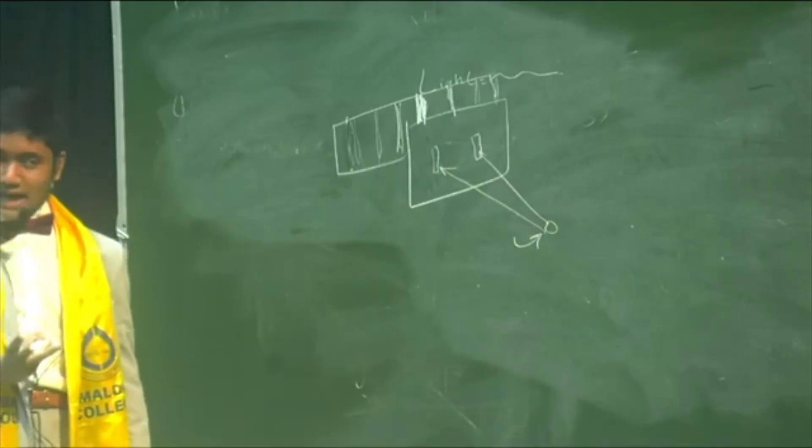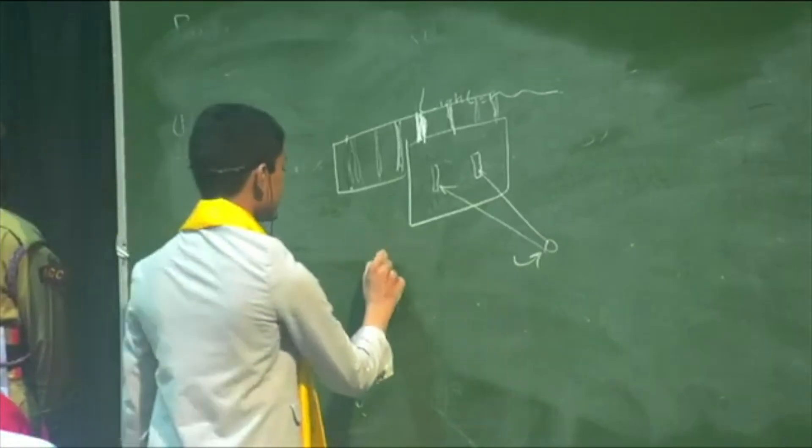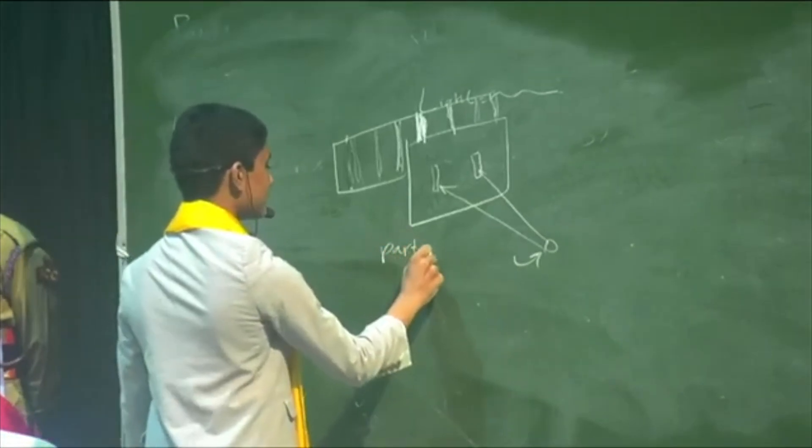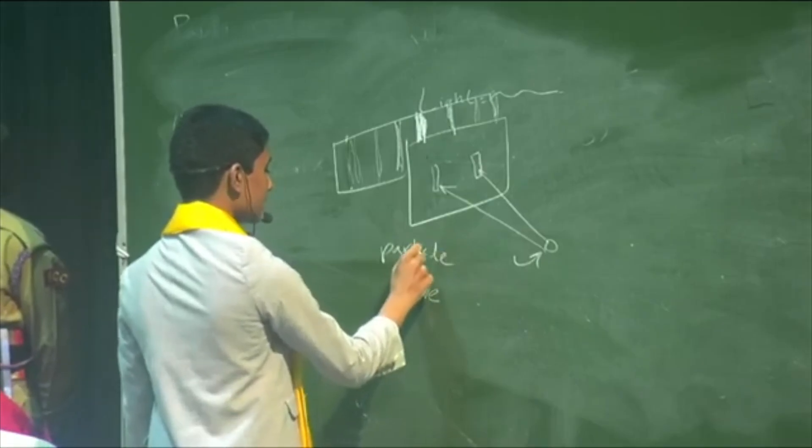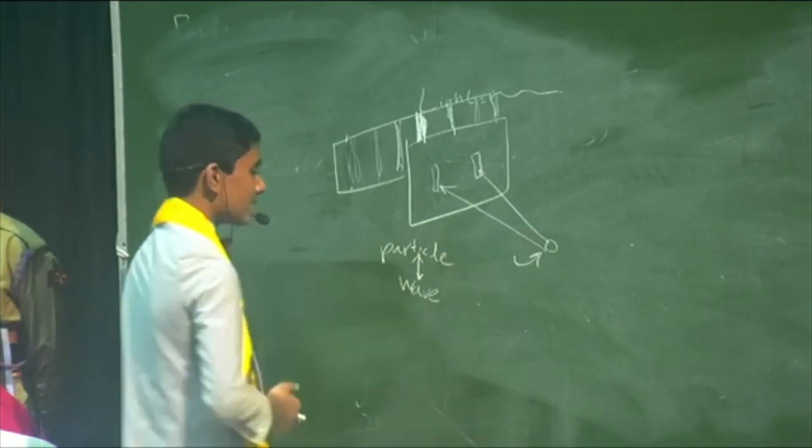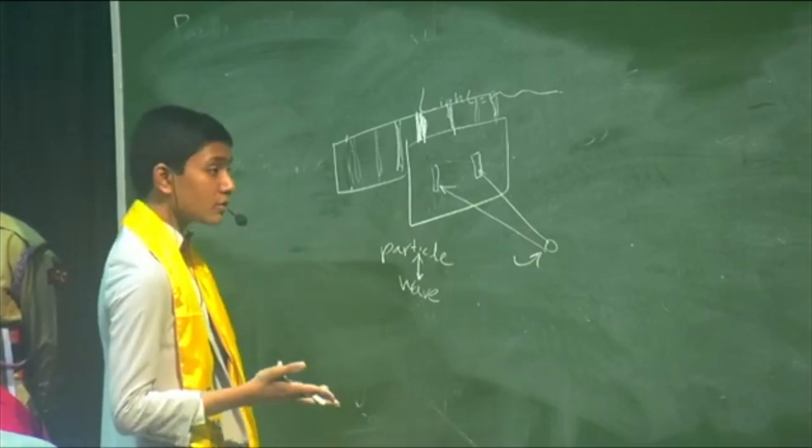And so the problem was that, even though light was supposed to be a particle, it was displaying qualities expected of a wave. And so people started questioning if it was either a wave or a particle.